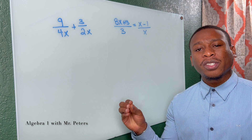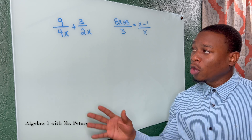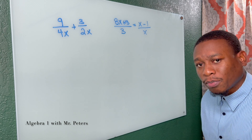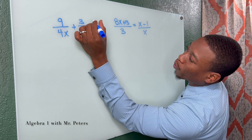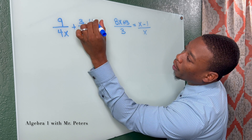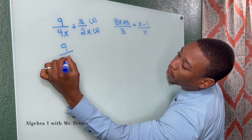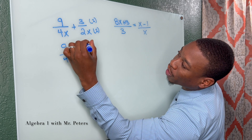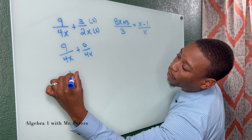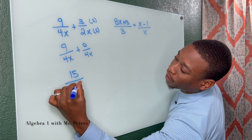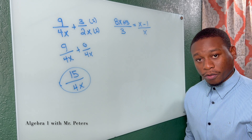Starting this video out, when solving rational equations or expressions, we always know we can use the concept of finding common denominators. So if I focused on this first problem and multiply the second fraction by two, I would be able to add this expression. And what we would get as a final answer is 15 over 4x — cannot simplify any further.